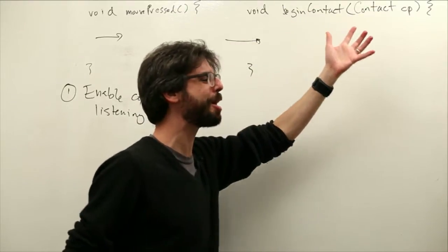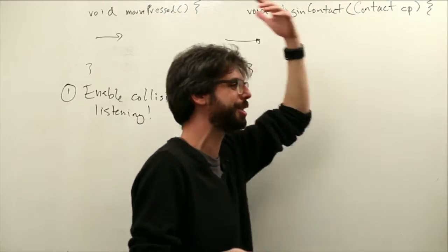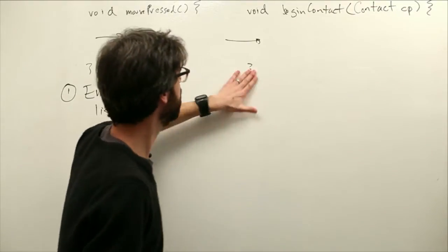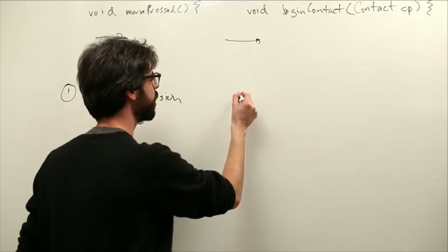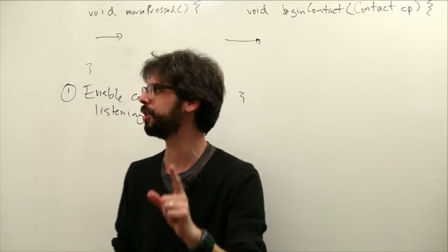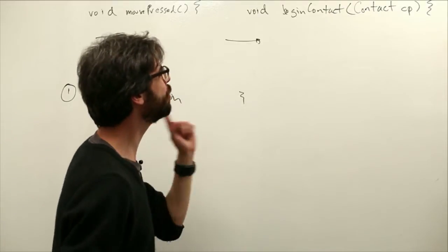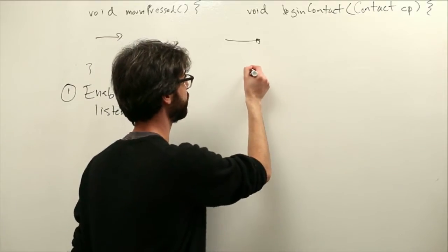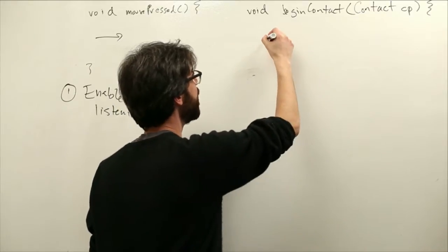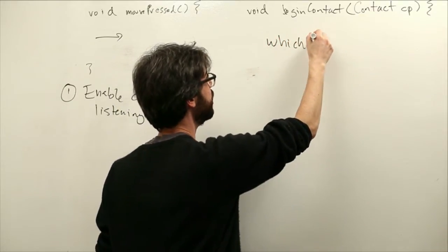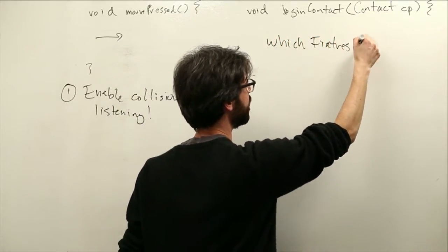You can pick a different variable name. C, contact, con, whatever you want. I called it CP. It's sort of arbitrary. So here's the thing. What CP will tell you is it will tell you which fixtures collided.